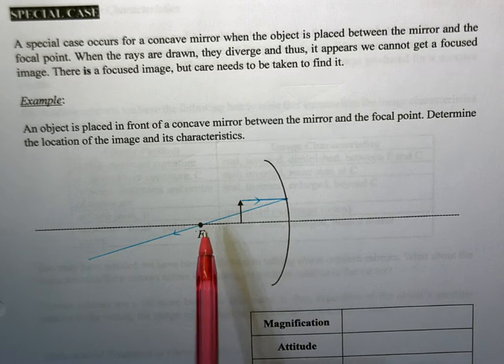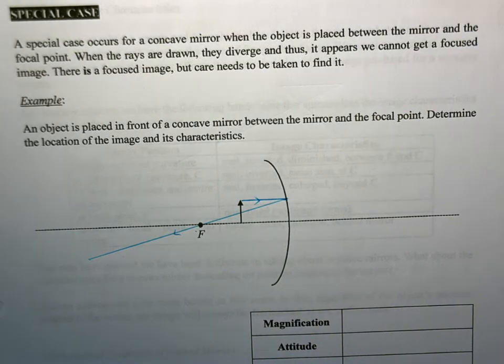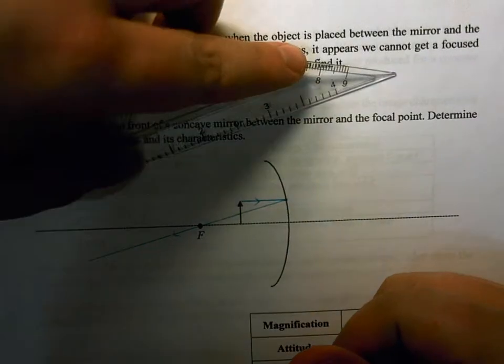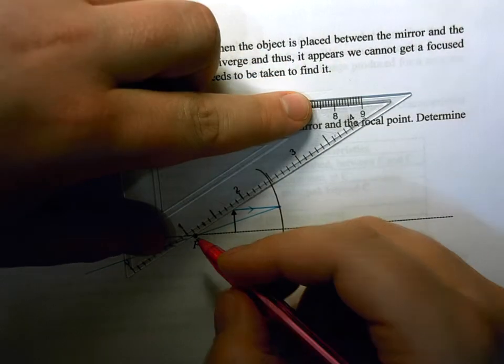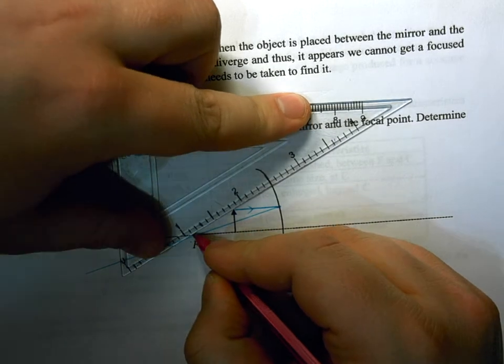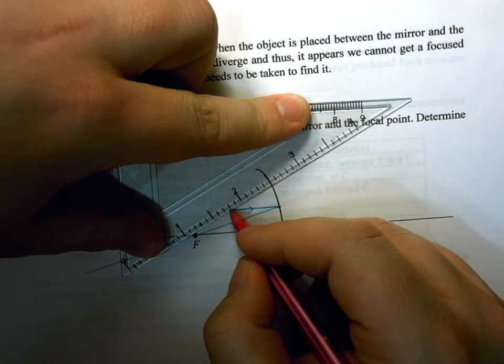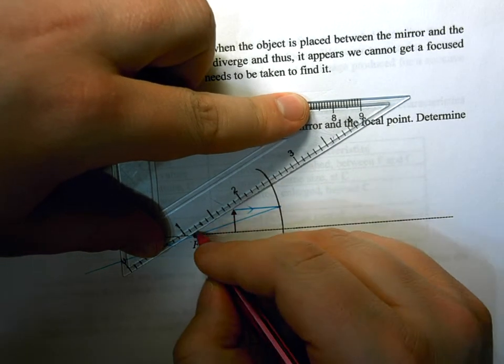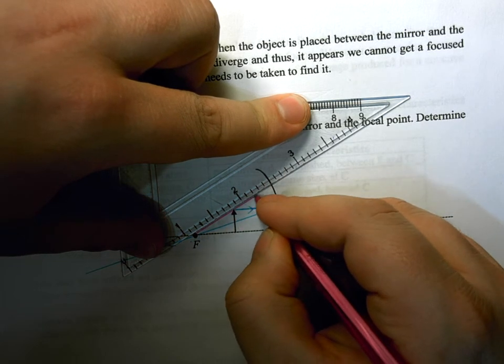We can draw the second ray. It's going to require a little bit more finesse. We're used to drawing something going through the focal point and then reflecting parallel with the principal axis. That one's a little bit more difficult this time. What's actually going to happen, and this is the trick, you're going to start at the focal point. What you want to do is you're going to start at that focal point. You want to pass the light ray just over top the tip of the image.